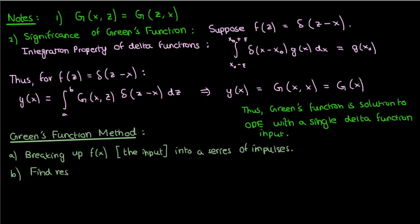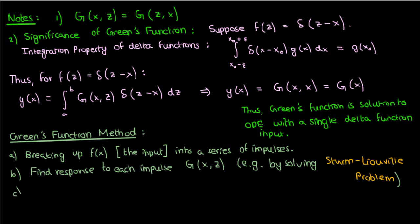Then we're finding the response of the ODE to each of those delta functions. In other words, we're finding the Green's function. And finally, we're adding or integrating the solution to those impulses, those Green functions, to find our full solution y of x to an arbitrary input f of x.